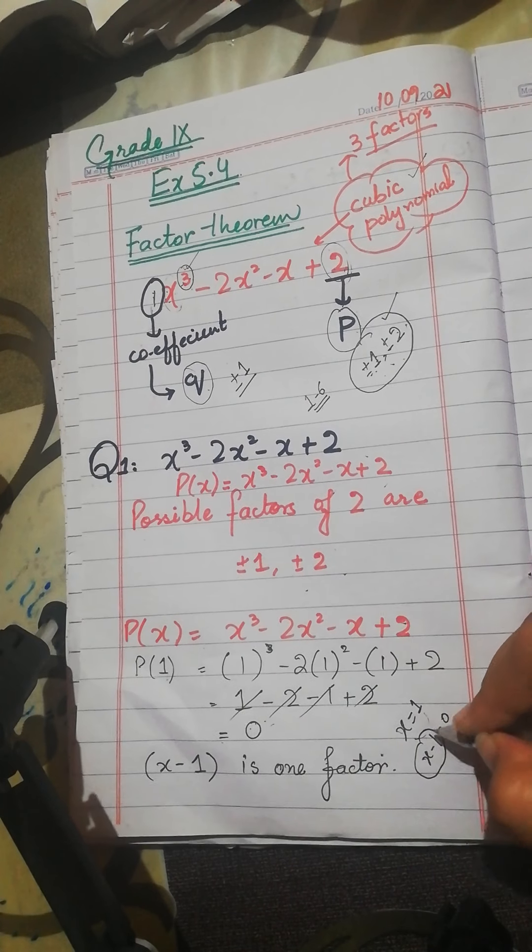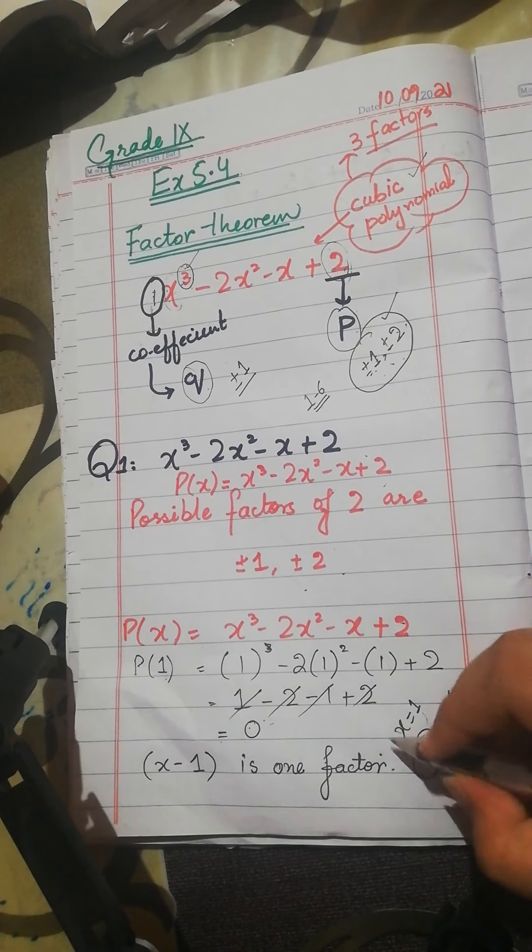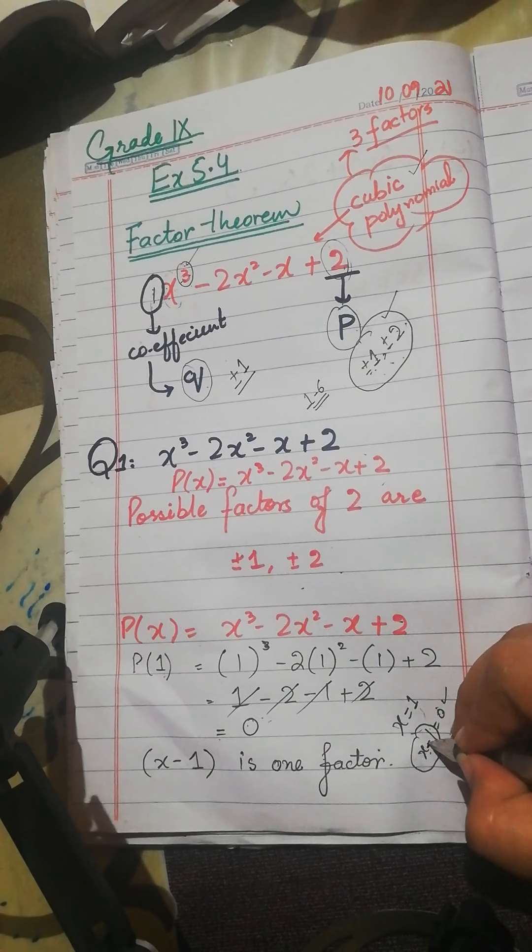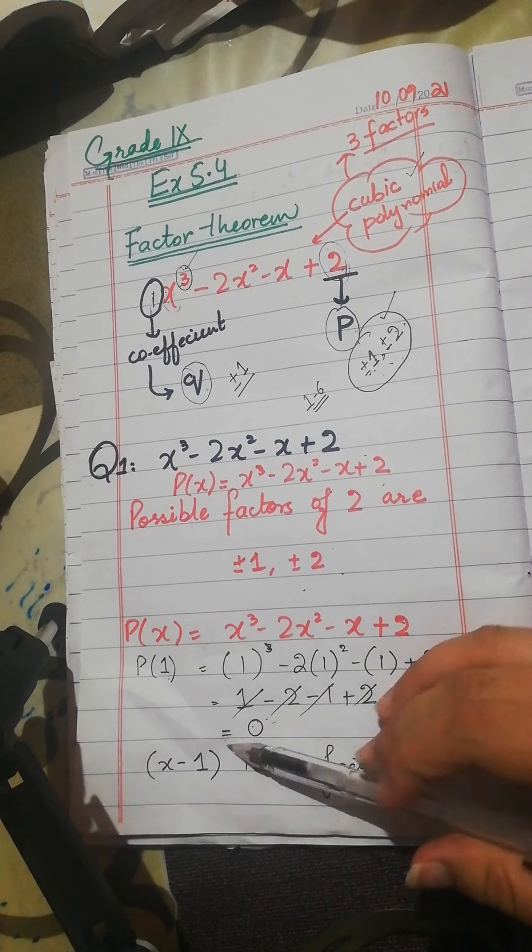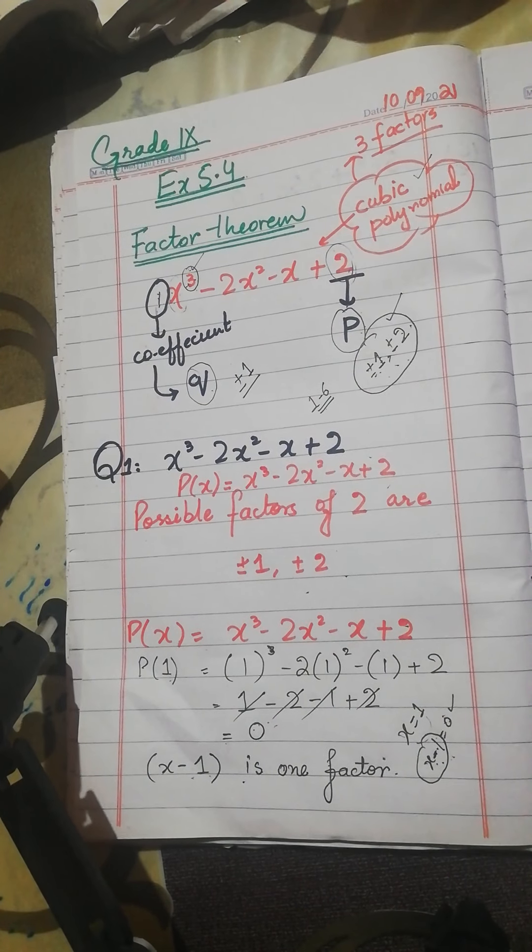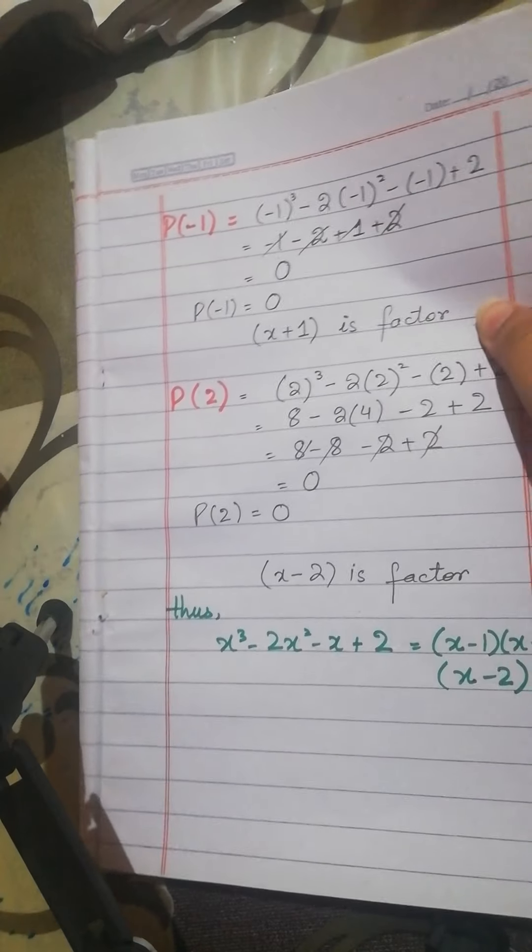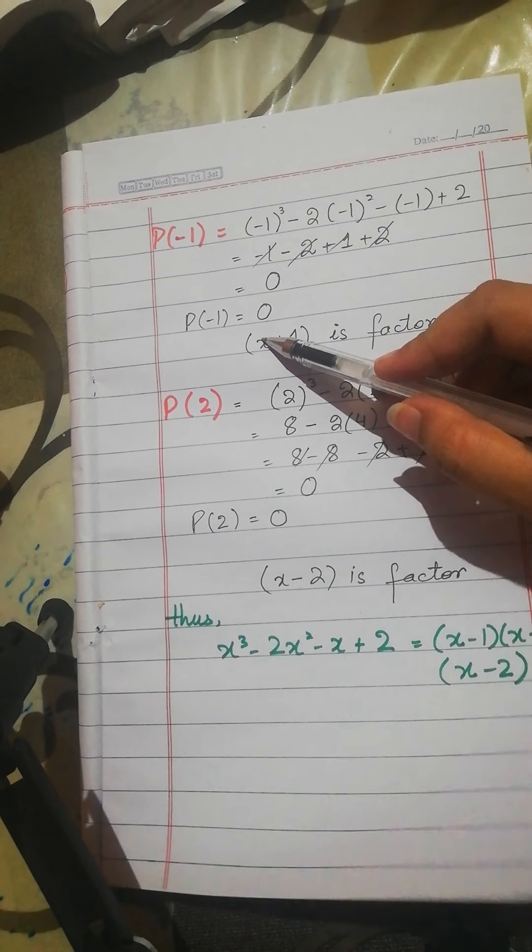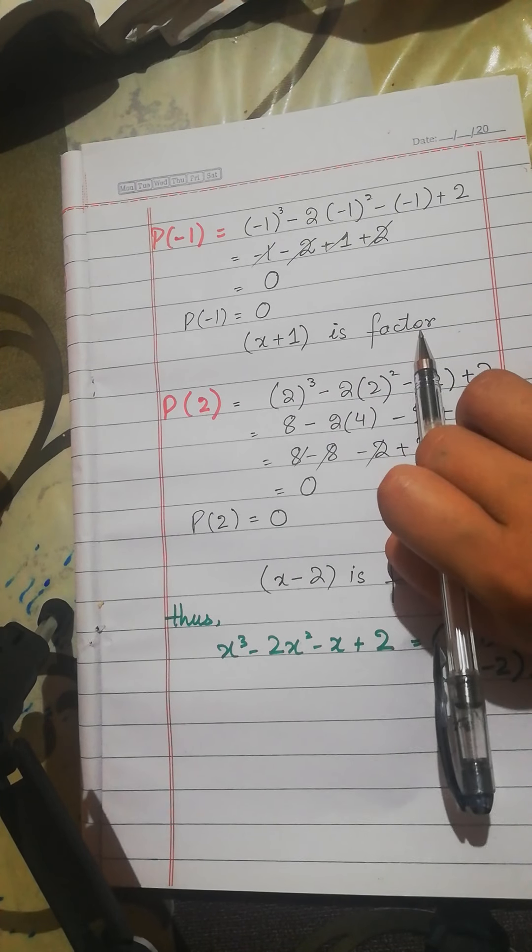Okay? Basically, x minus 1 is equal to 0. So, we have to say that x minus 1 is a factor. Put it positive. But in this rule, x minus 1 is a factor. Same lines. Now we will check to minus 1. When minus 1 is also 0, we will say that x plus 1 is a factor.